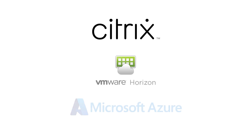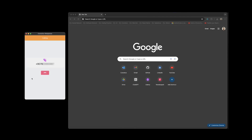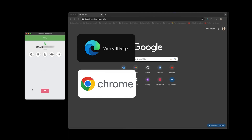Comstis Web Phone also supports VDI solutions like Azure Virtual Desktop, VMware Horizon, and Citrix out of the box, since VDI solutions support native WebRTC phones. If you have other users outside Cisco Finest, they can use Comstis Web Phone with Cisco Call Manager in your internal pages, or as a browser extension with Microsoft Edge and Google Chrome.